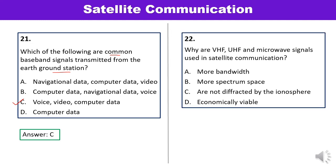Question 22: Why are VHF, UHF, and microwave signals used in satellite communication? These signals are used because they penetrate the ionosphere with small or almost no attenuation and are not refracted back to the earth. Answer C is correct.